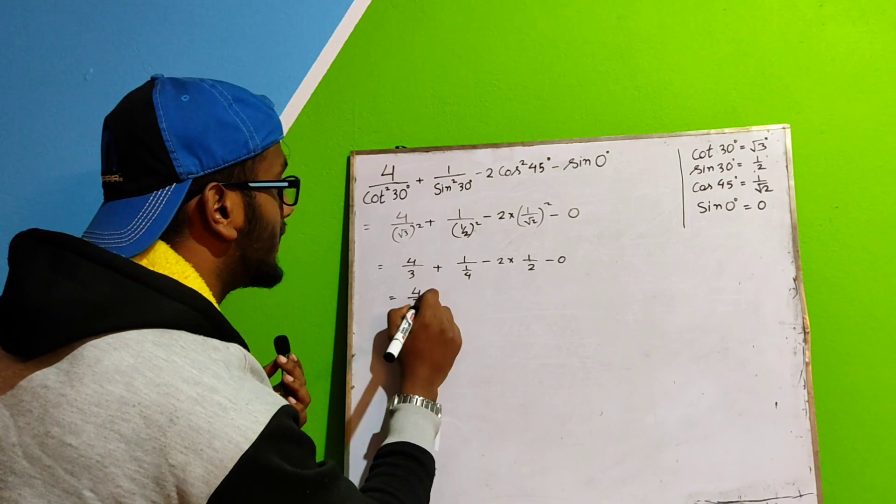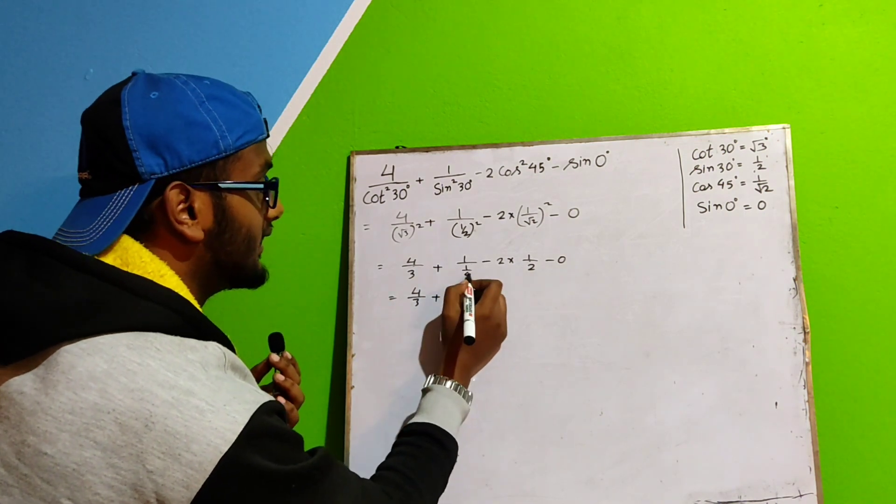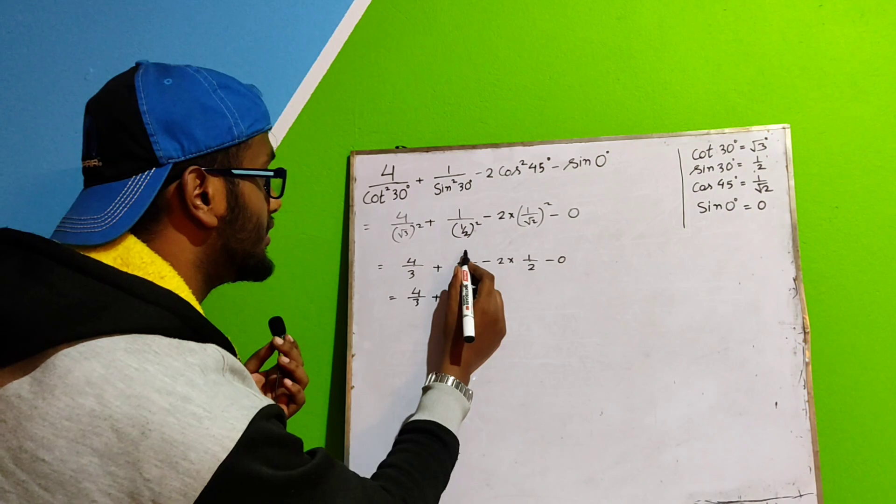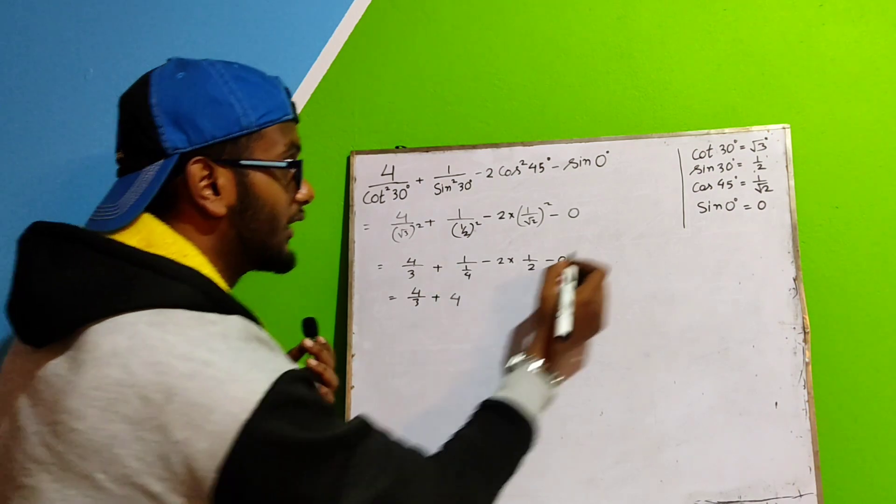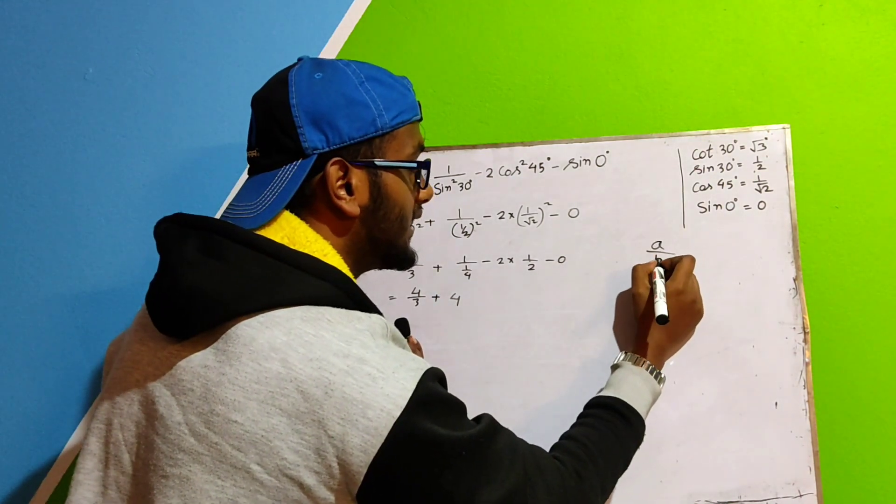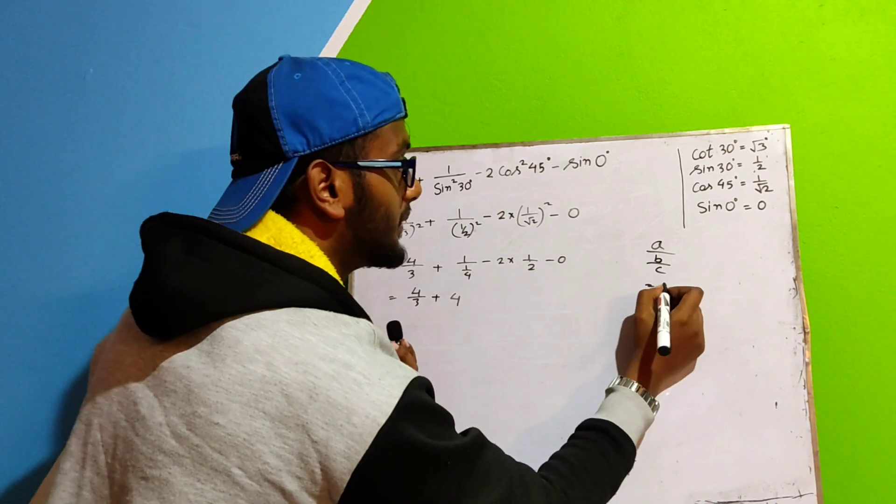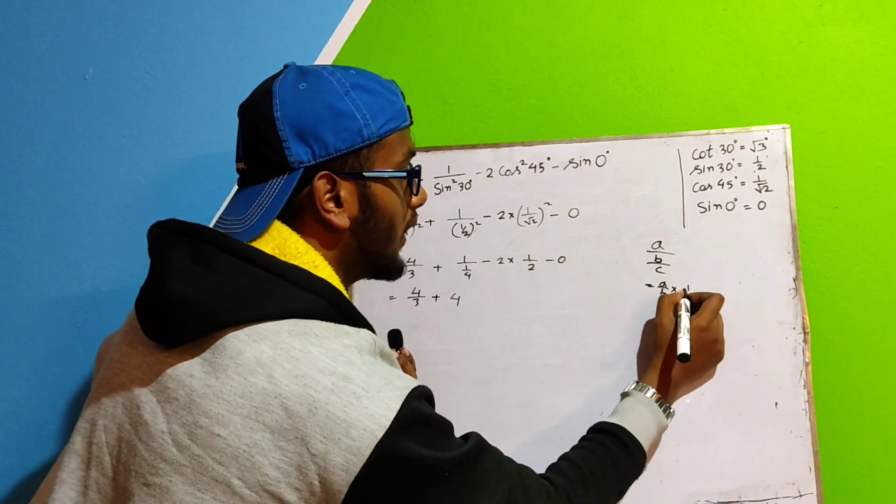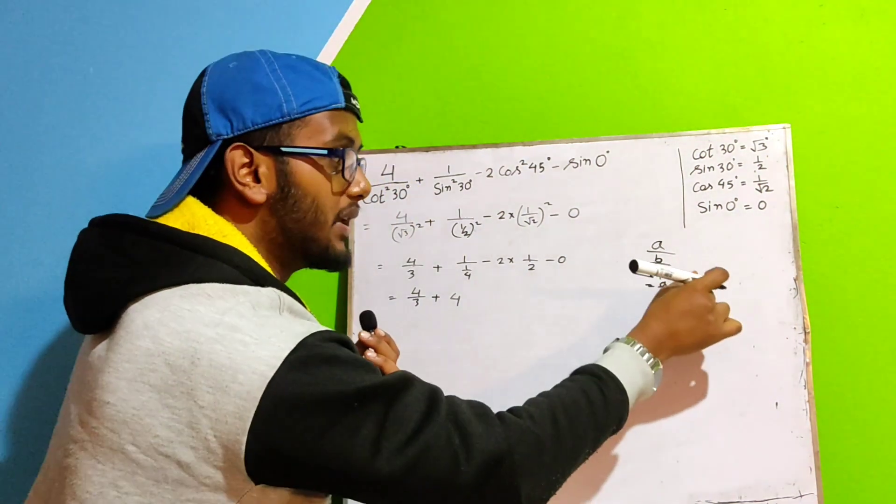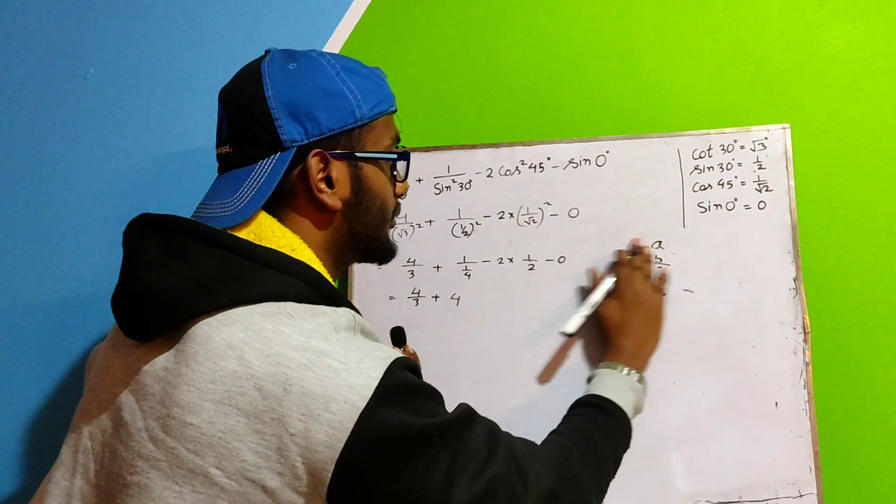Now, this one becomes 4 by 3 plus. Look here. Here, the 4 will go to the numerator. As we know, a by b divided by c, this becomes a by b into 1 by c. This one gets inverted. So we will use this one.